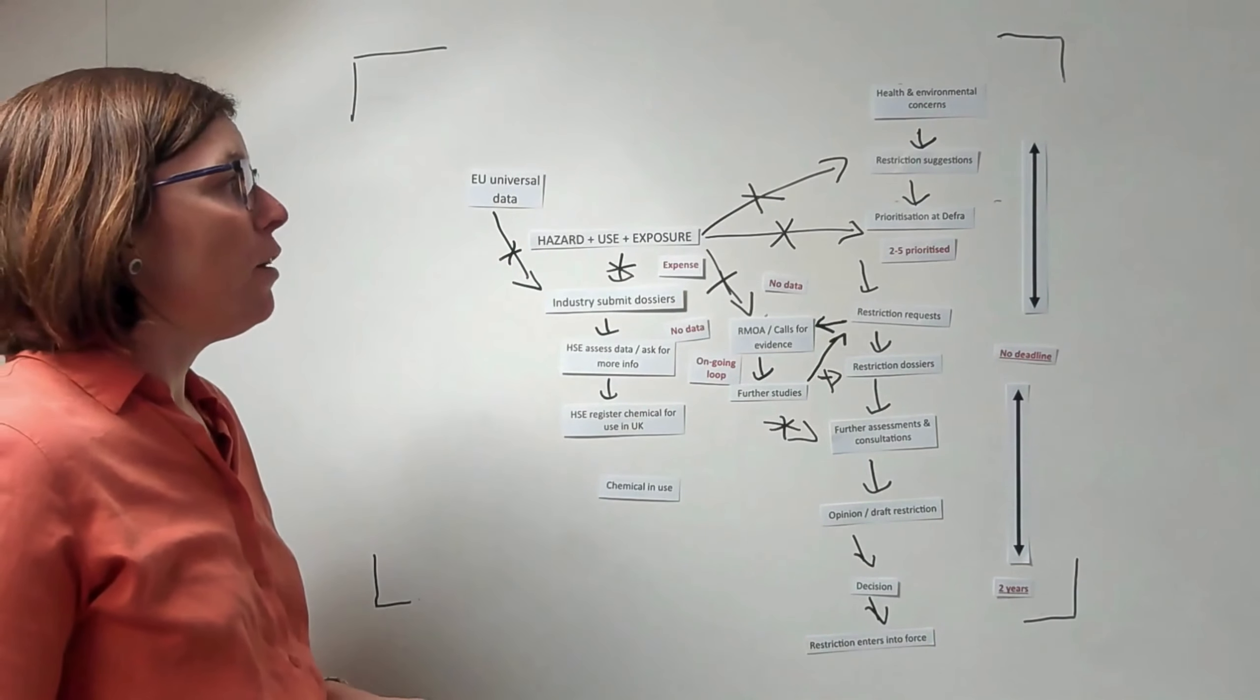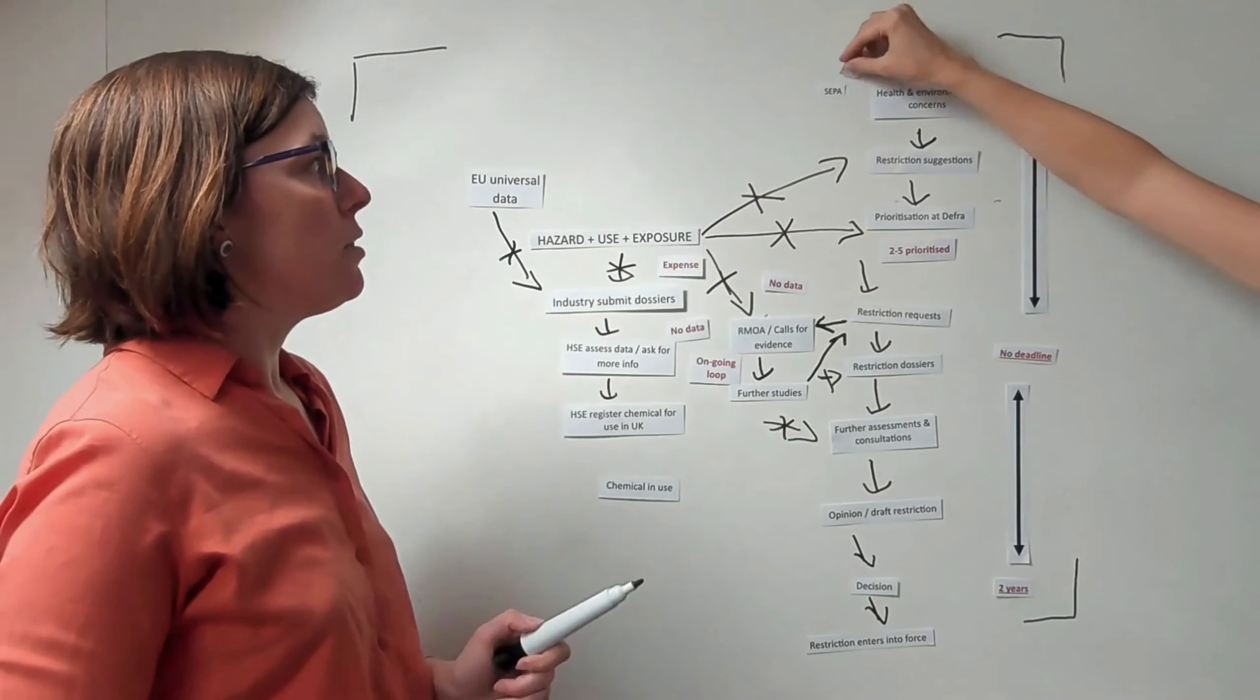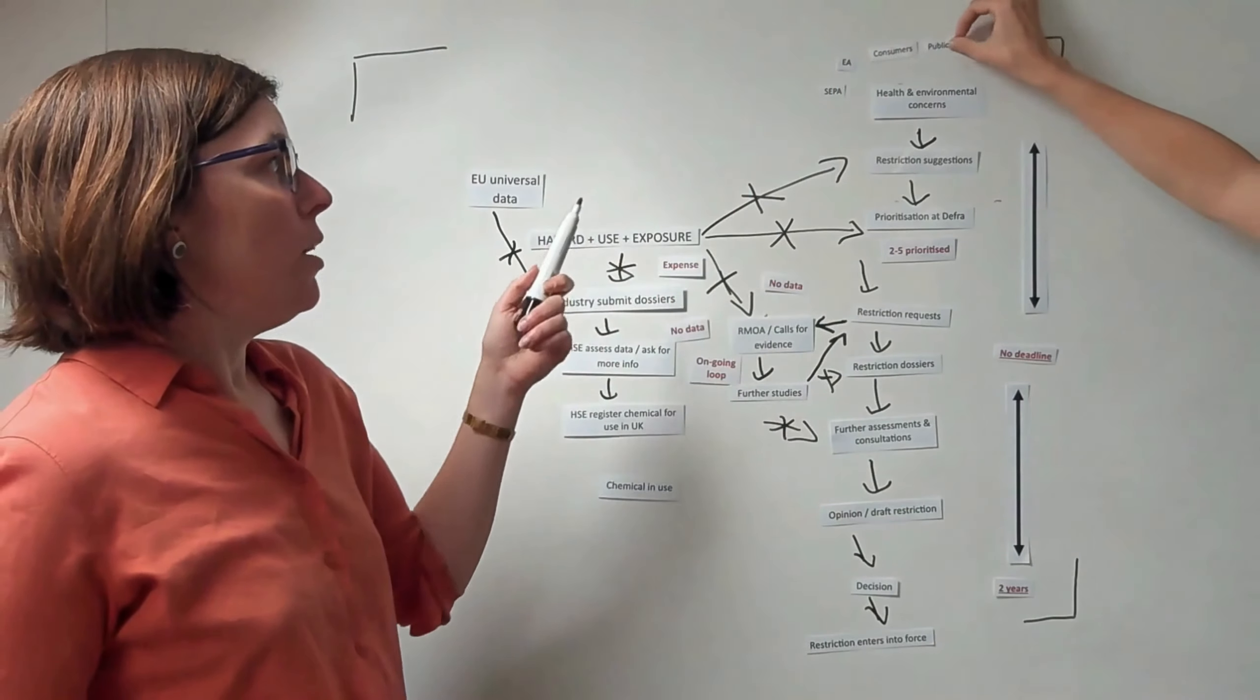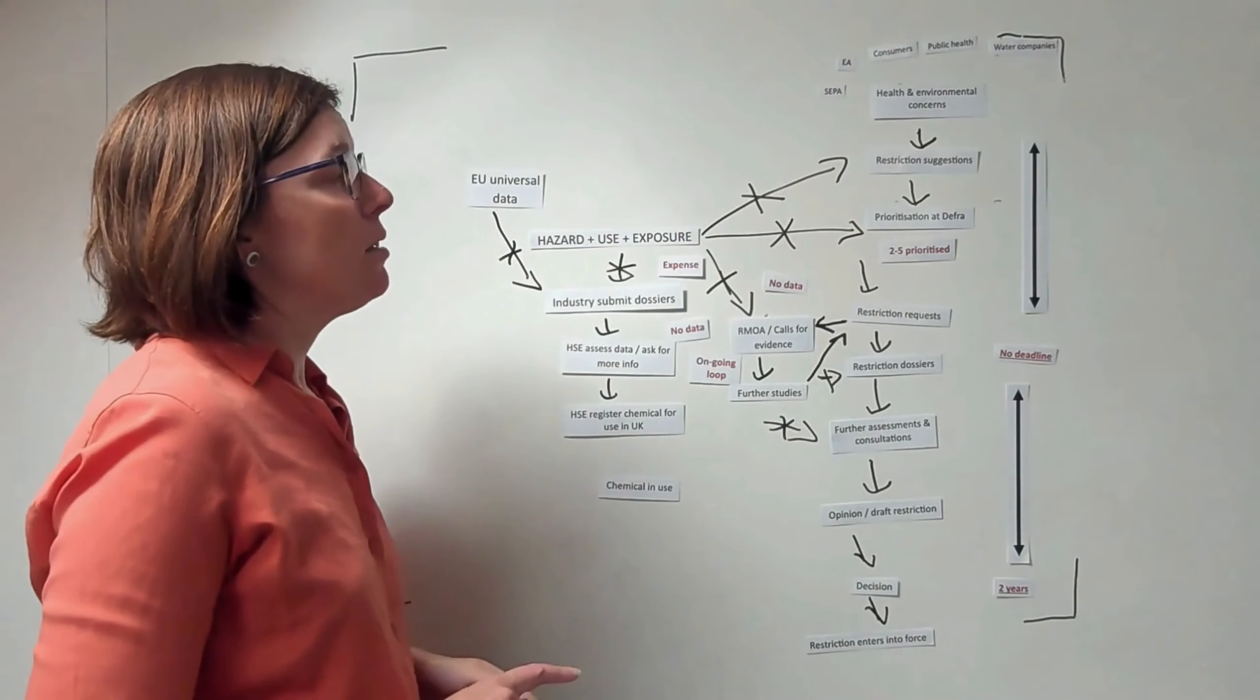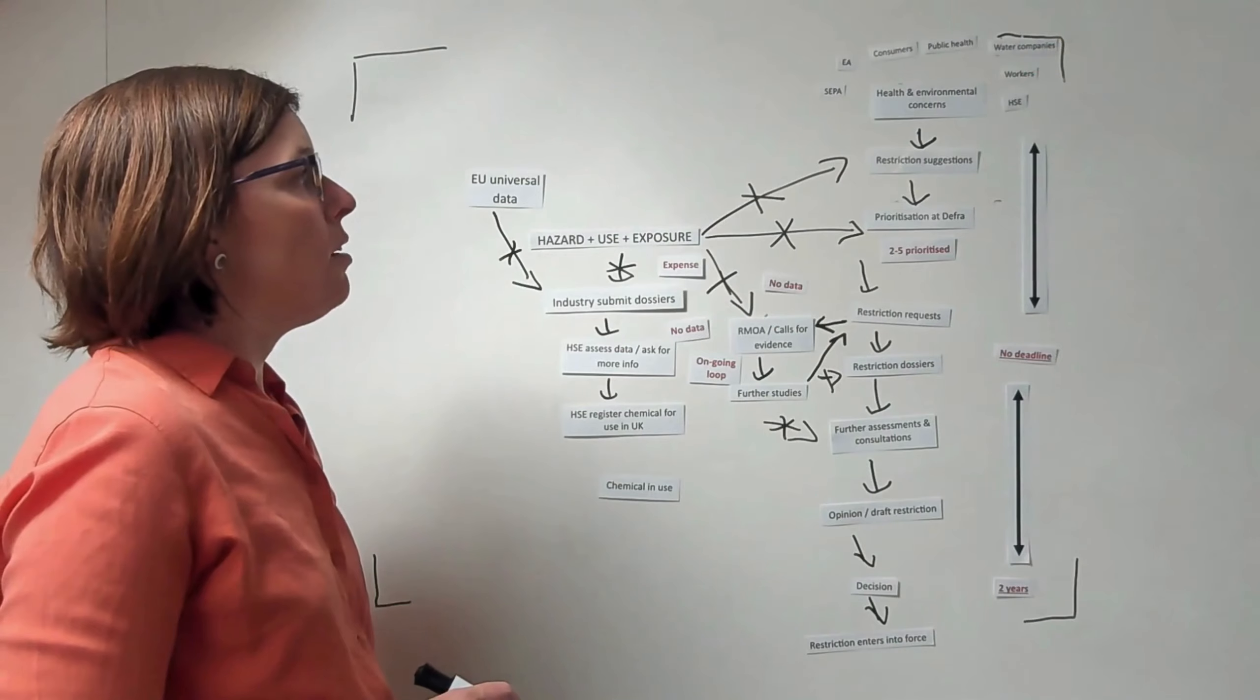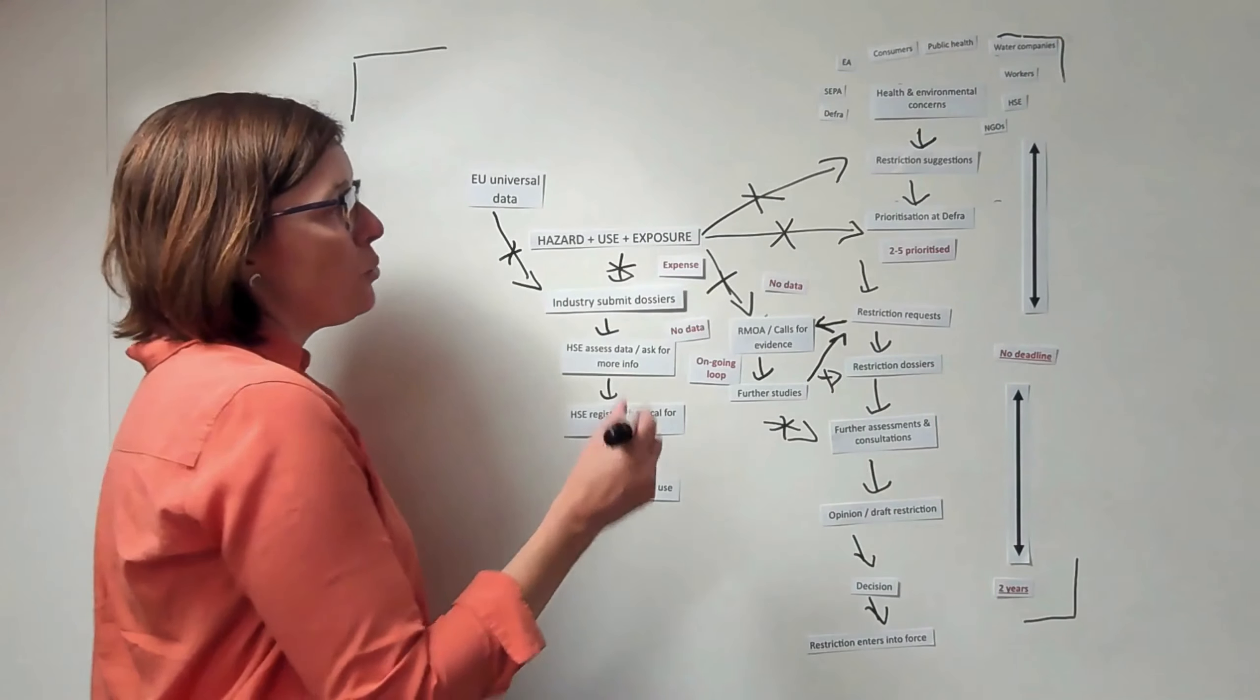The health and environmental concerns, when we were in the EU, came from a range of different agencies. For example, it would have come from consumer groups or public health bodies, perhaps water companies might have noticed something, workers' groups, as well as the policy leads and regulators or perhaps charities, and these would all feed in information.